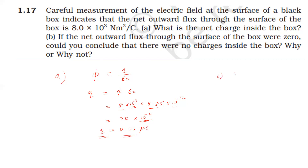In the second case, if the net output flux is zero, by Gauss's law Q = Φ × ε₀ = 0, so the total net charge is zero. However, this does not mean no charges are present — for example, a +5 μC and a −5 μC inside would cancel to give zero total charge, so Gauss's law only tells us the total net charge, not whether individual charges exist.